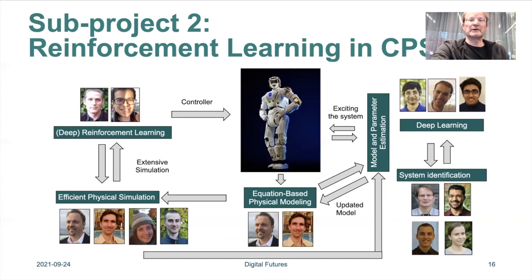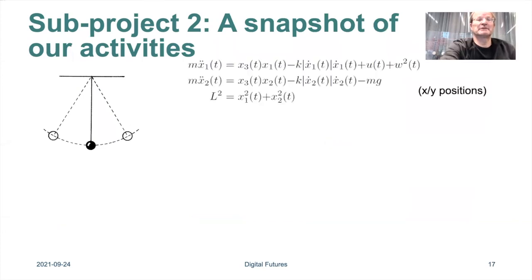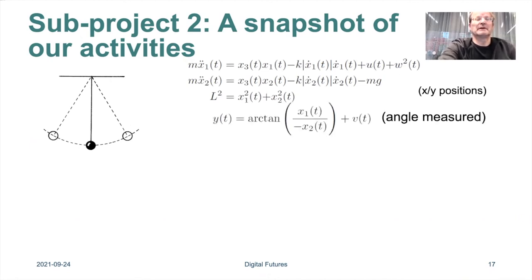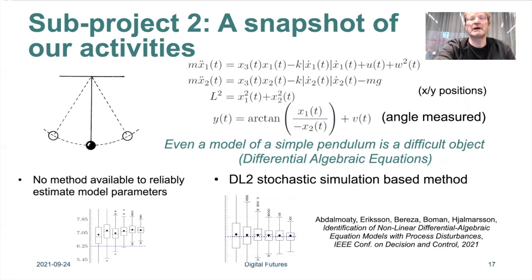That is the overall picture of the project. For a brief snapshot of our activities: we look at the equations for a pendulum that we want to model. This very simple system leads to a quite complex model. In fact, there is currently no method available that can reliably estimate the model parameters of this simple model. In the graph, the dashed line represents the true value of one of the parameters, and the crosses represent model estimates — moving right corresponds to more data used, yet no improvement in the estimate is seen. In this project we have a new method that achieves exactly that: with more data we get a more accurate estimate, and this will be presented at a conference this fall.